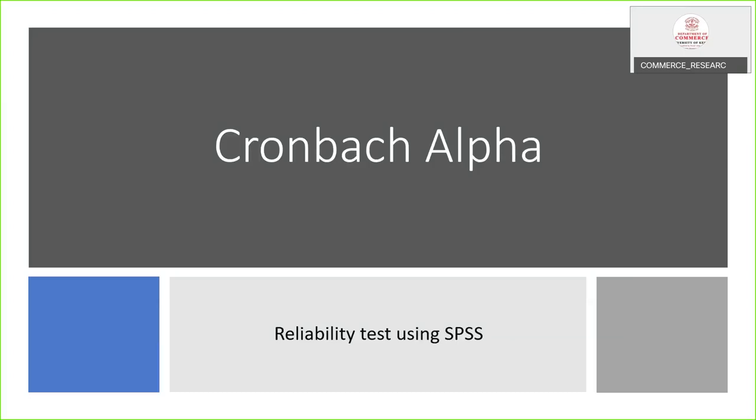Now we can discuss Cronbach alpha. Cronbach alpha is used for reliability test of scales. We had videos testing the importance of reliability of scales, and we are using the Likert scales. So if we use the Likert scales, we should check the reliability of the scales used for the purpose of survey. If the scale is not reliable, it cannot be used for further analysis.